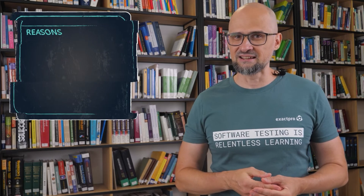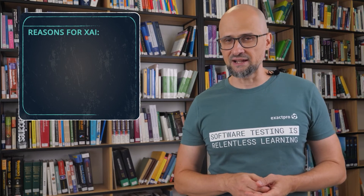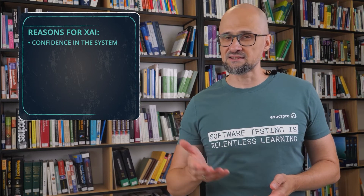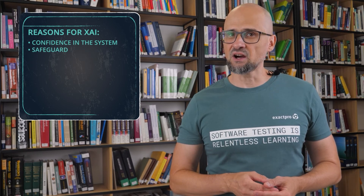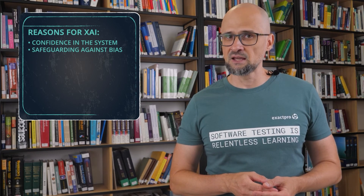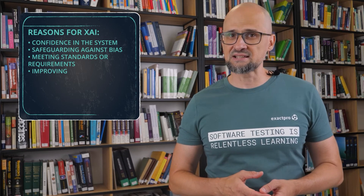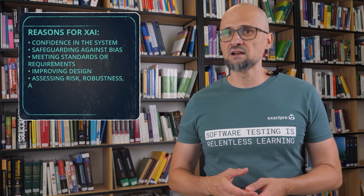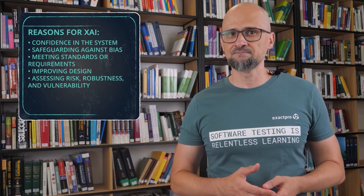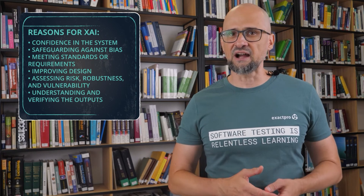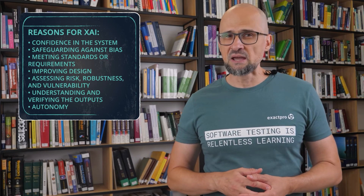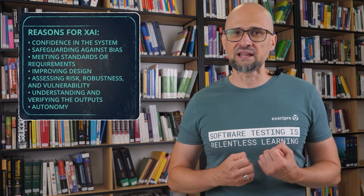According to the Royal Society, there are several reasons for explainable AI, including giving users confidence in the system, safeguarding against bias, meeting regulatory standards or policy requirements, improving system design, assessing risks, robustness, and vulnerability, understanding and verifying the outputs from a system, and autonomy — making the user feel empowered and meeting social value. These reasons eventually developed into principles by the Organization for Economic Cooperation and Development, and were later adopted by the European Commission.